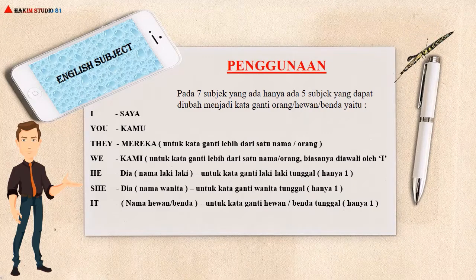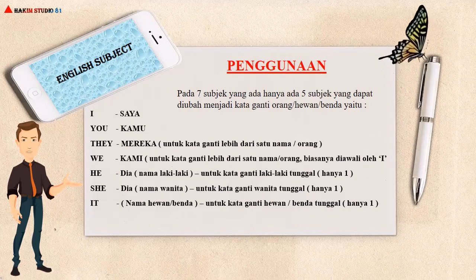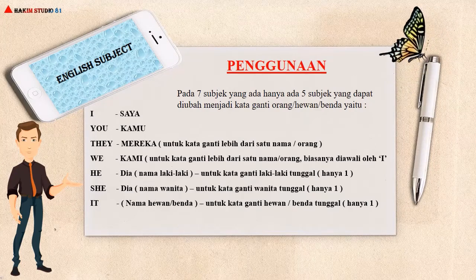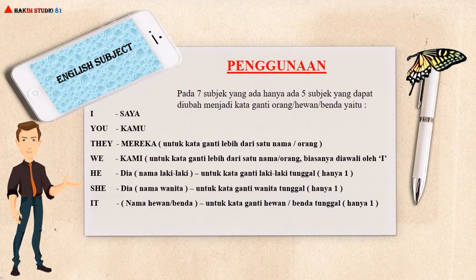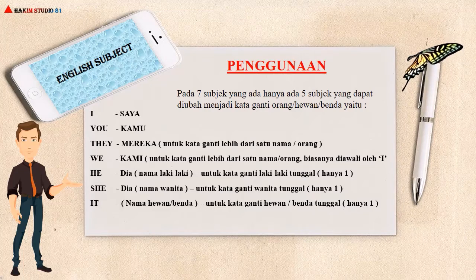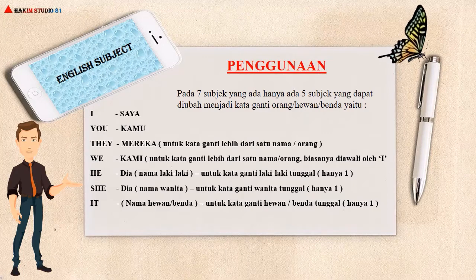Seperti Ani dan Ayu, atau Ani, Ayu, Dina, dan Bayu, dan lain-lain. Intinya, namanya lebih dari satu. Lalu, bisa juga digunakan pada kumpulan nama, seperti My Family — keluarga itu lebih dari satu orang. Dan bisa juga digunakan pada nama-nama profesi dan nama hewan, dengan catatan ada penambahan huruf S di belakang nama hewan atau profesi tersebut, yang menandakan jika hewan atau profesi tersebut lebih dari satu.